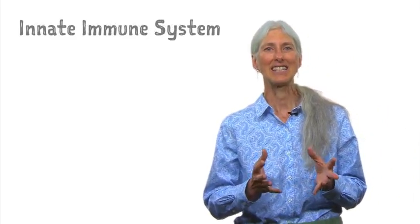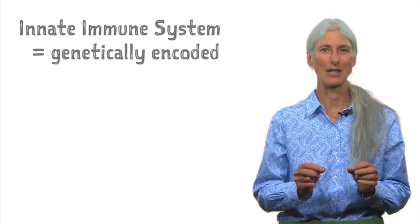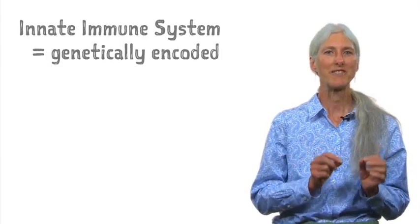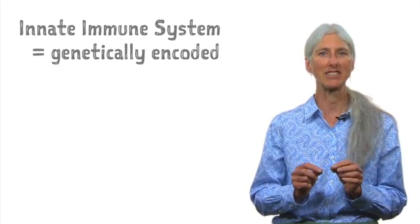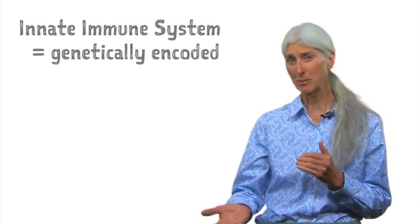This system is called innate because it is genetically encoded, so traits that efficiently protect us from infections can be passed to our offspring.